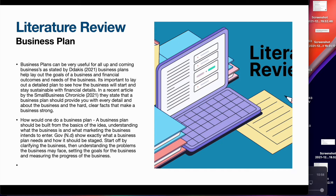On the gov.co.uk website it shows exactly what a business plan needs and how it should be staged. Starting off by clarifying the business — what business I want to do and what market I want to enter. Two is understanding the problems that my business might face, such as what funding the business needs, how I can reach potential customers, how I'm going to grow from the start, and how I'm going to gain athletes or people to work with.